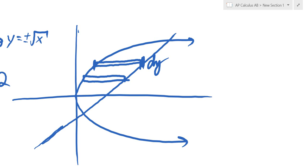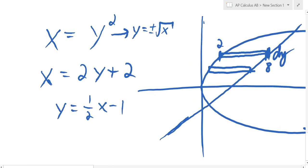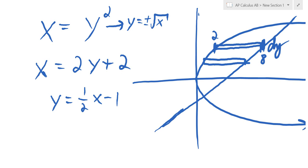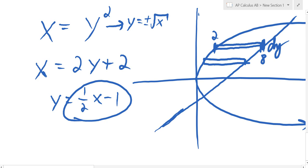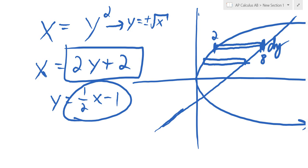I also need to find the width of these rectangles. If I told you one side was 8 and the other was 2, the width is 6 — right side minus left side. But the widths are changing, so I need a formula. The curve on the right is x equals 2y plus 2. I need it in terms of y since I'm integrating with dy. At no point should you have a dy and have x's in your integral — if you have dy, you need all y's.